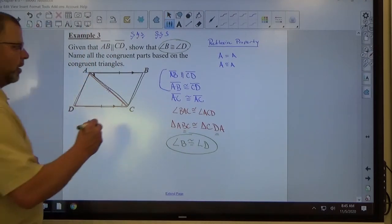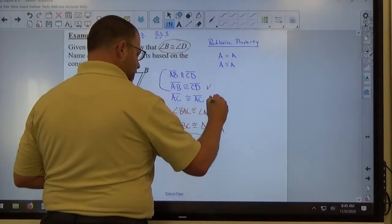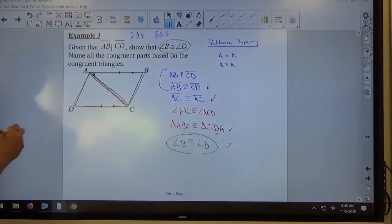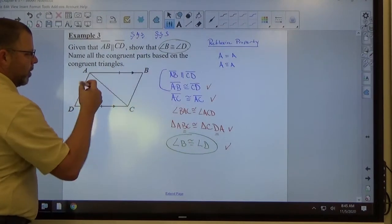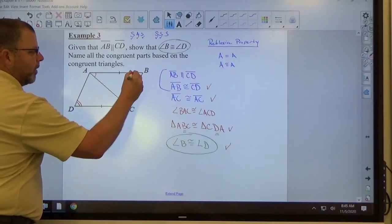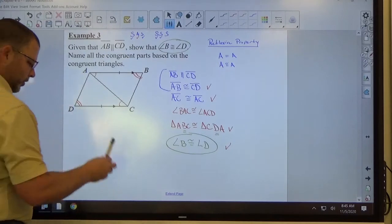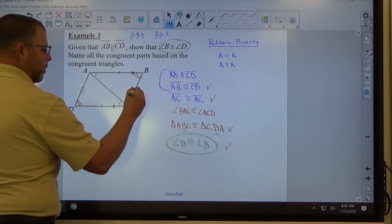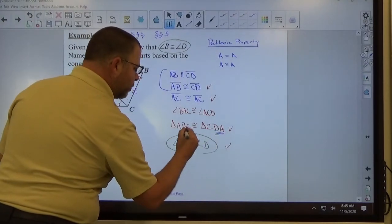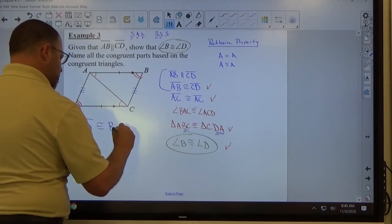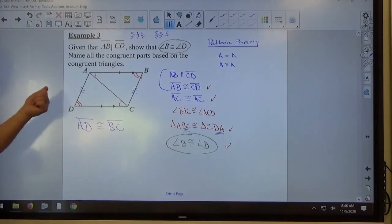It does say name all the congruent parts based on the congruent triangle. So we've already got, there's side, there's a side, there's an angle, there's an angle. So there's only one more pair of congruent pieces, right? So we'll just erase all this. We already know that's congruent to that. We just figured out that's congruent to that. So what's left over is that AD should be congruent to BC based on their names, right? There's AD, there's BC. Before we got the triangles congruent, there was no way to tell they were congruent. But now that the triangles are congruent, now we can say they're congruent.